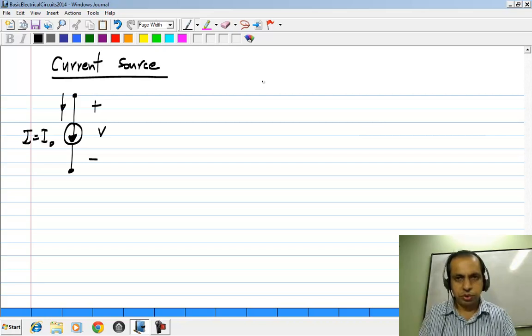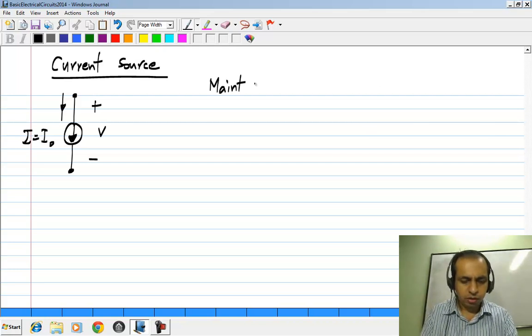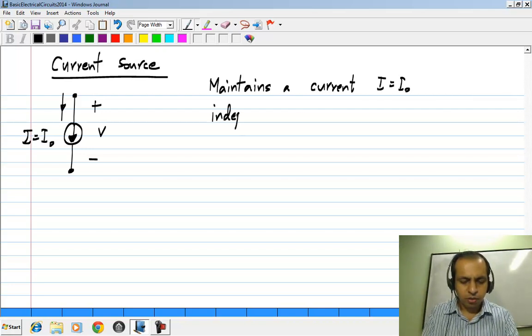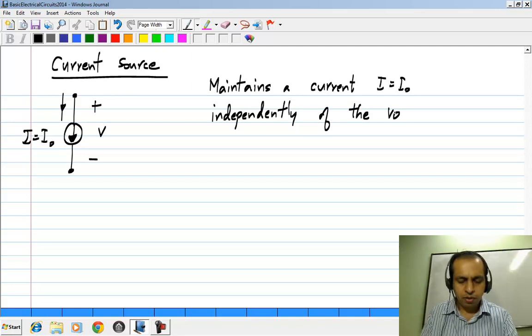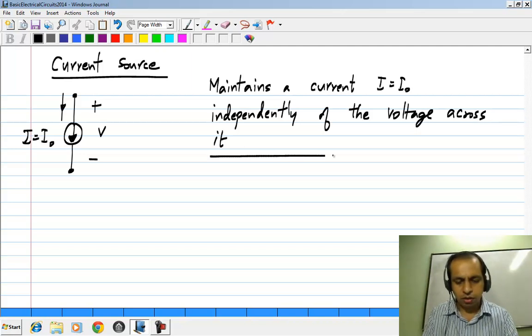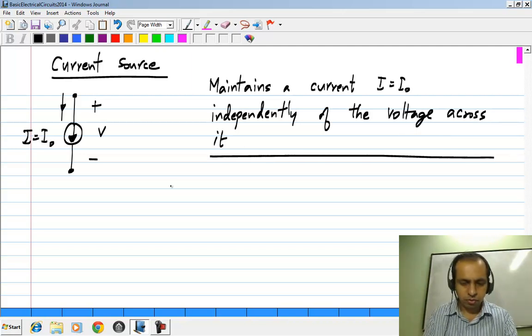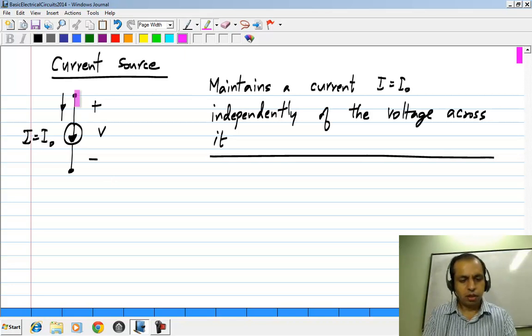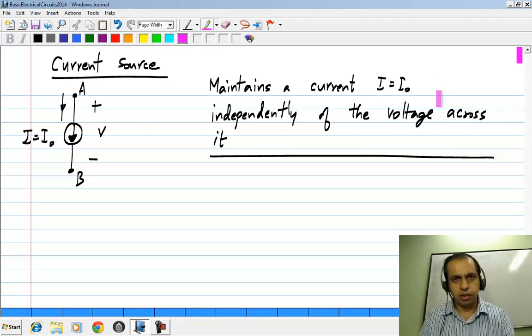What does a current source do? It maintains a current I equals I naught independently of the voltage across it. It does not matter what voltage you have between these terminals A and B. A current I equals I naught will be flowing through the current source.